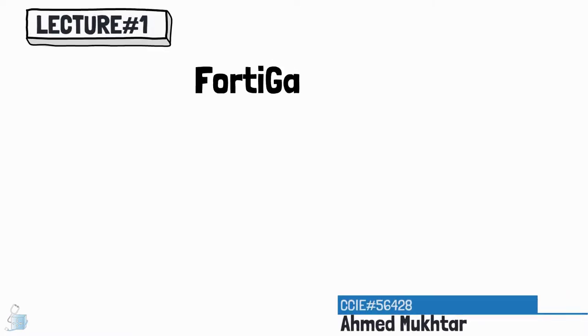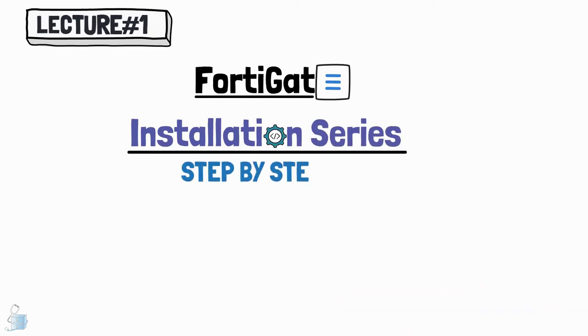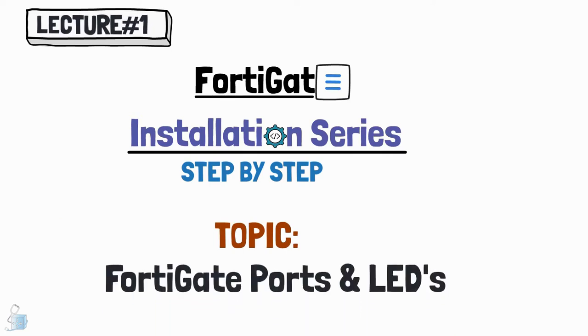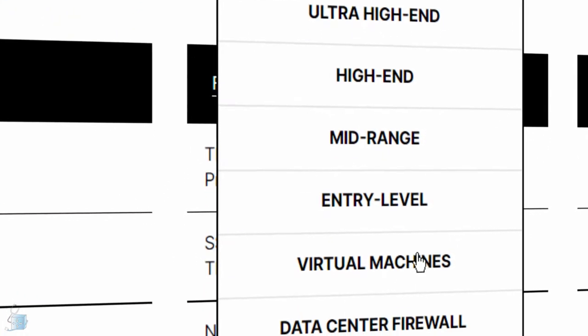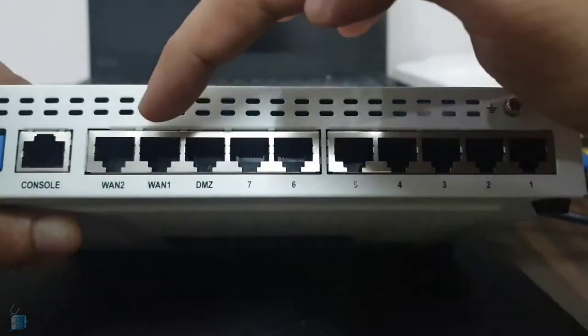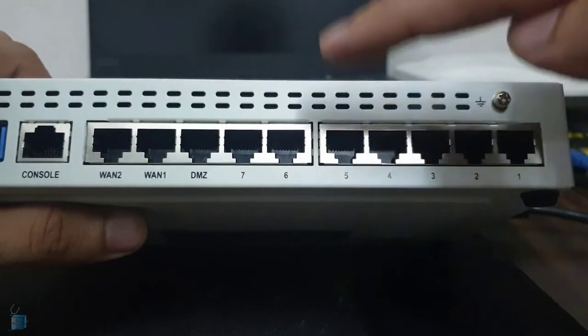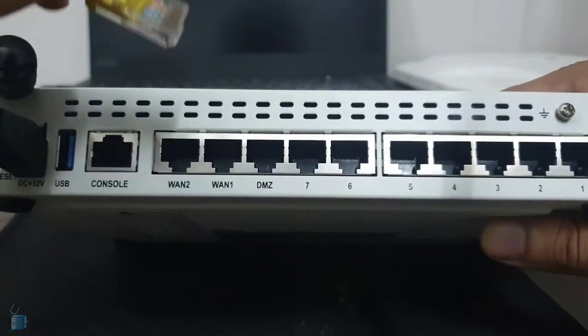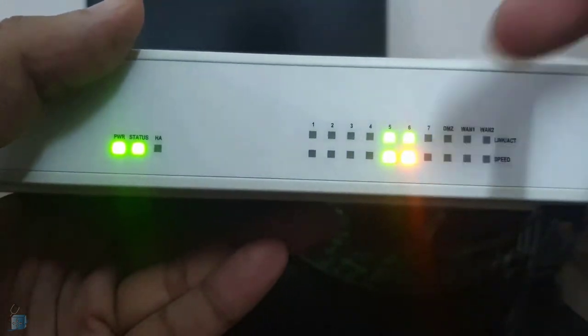Welcome to lecture number 1 of our FortiGate installation series, where we install a FortiGate firewall on our network step by step. Today's topic is FortiGates: Ports and LEDs. In this video we will look at the different FortiGate firewall categories that FortiNet has to offer, the physical aspects of our FortiGate 60E firewall, its physical interfaces and how they work, and finally the LED lights and their meanings.